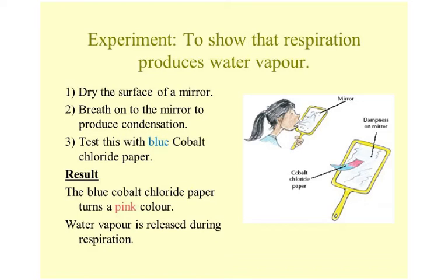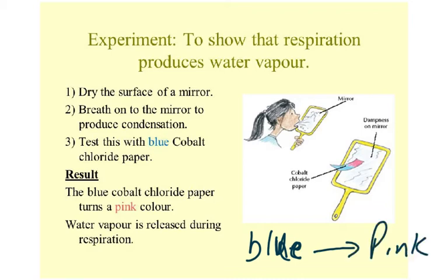The third experiment is to show that respiration produces water vapors. You dry the surface of a mirror, breathe onto it to produce condensation, and test this with blue cobalt chloride paper. The result is that the blue cobalt chloride paper will turn pink. You hold the cobalt chloride paper with forceps because if you hold it with your hand, the moisture on your hand might change the color. Exhaled air is saturated with water vapors, though the inhaled air depends on environmental humidity.